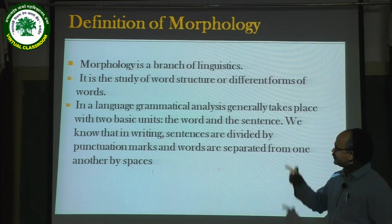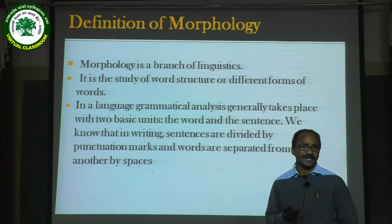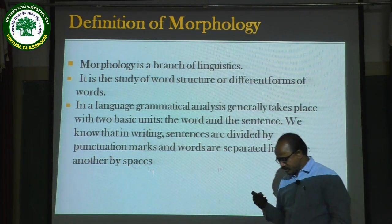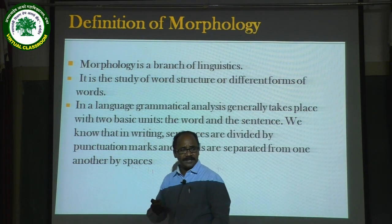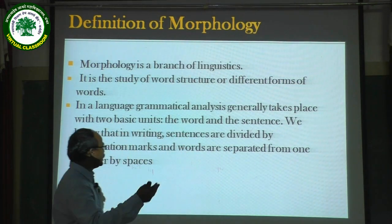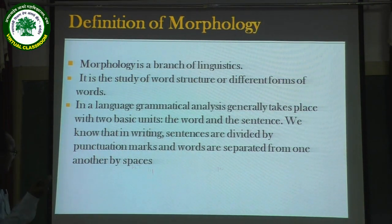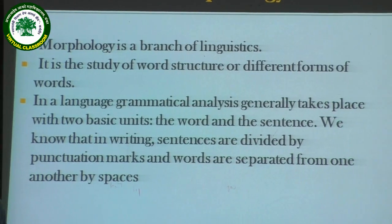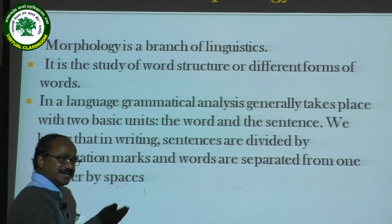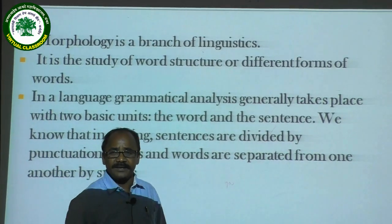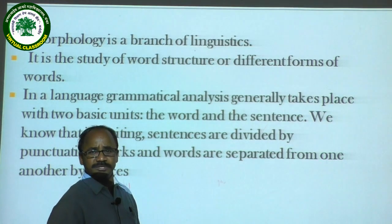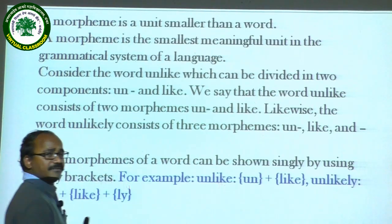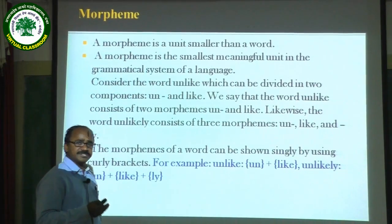In a language, grammatical analysis generally takes place with two basic units. The first is the word, and the second unit is the sentence. Words are divided by spaces — there are spaces between words. When you divide a sentence, we divide it by commas. That is why word is a very important aspect in morphological analysis.